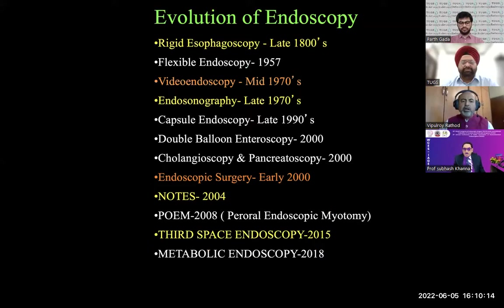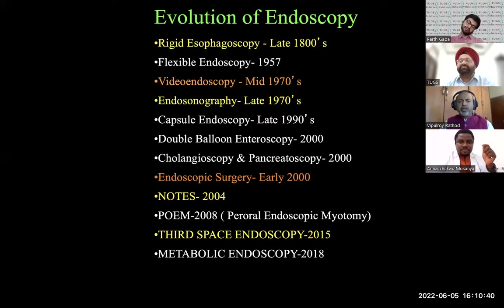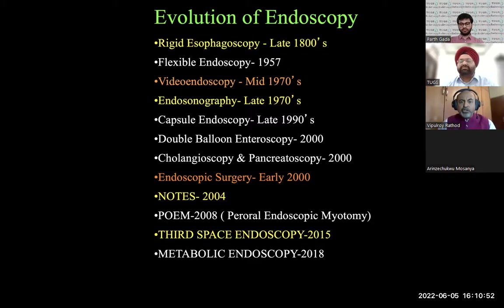Just to give you a little idea of how endoscopy has evolved over the last six or seven decades — the most significant landmark was 1957, when Professor Basil Hirschowitz brought about the concept of flexible endoscopy. Over time, as you can see the evolutionary process, we have gone through a metamorphosis of technology, techniques, and many available accessories. This has brought us to a meeting like TUGS, which is dedicated to endoscopy for surgeons. We really appreciate the entire team's effort.